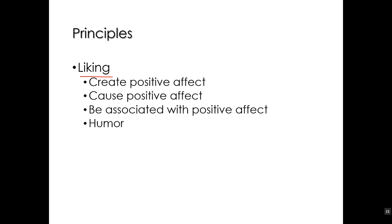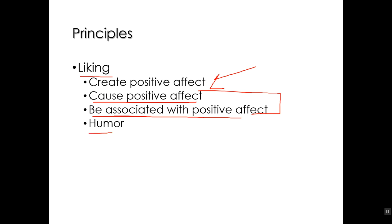Liking: getting people to like you. One way to do that is to create positive affect in the target person — that is, a good mood. You can do it directly by causing positive affect, doing things to make that person feel good. Or indirectly — being associated with any positive affect that exists, being there when you're doing some positive or fun activity. Humor is an embodiment of this principle: telling jokes and making somebody laugh will certainly create positive affect and make people like you more.